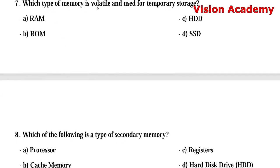Question number 7: What type of memory is volatile and used for temporary storage? Option A: RAM. Option B: ROM. Option C: HDD. Option D: SSD. The right answer is Option A, random access memory.